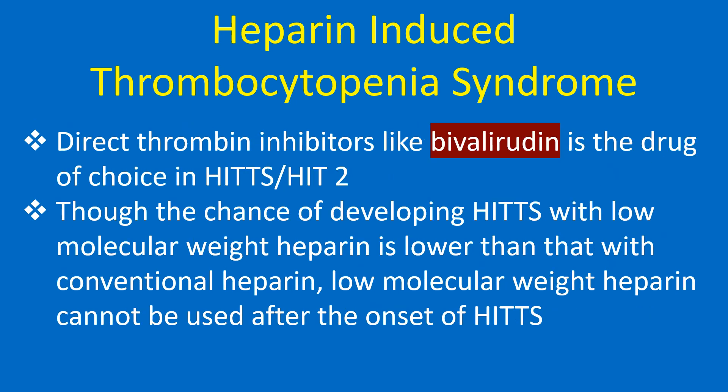Direct thrombin inhibitors like bivalirudin are the drug of choice in HIT. Though the chance of developing HIT with low molecular weight heparin is lower than with conventional heparin, low molecular weight heparin cannot be used after the onset of HIT.